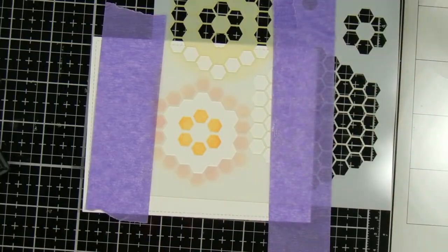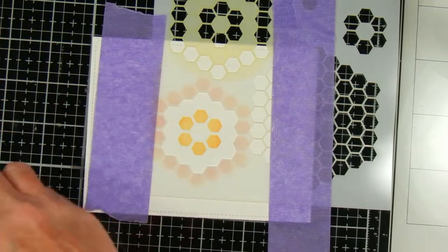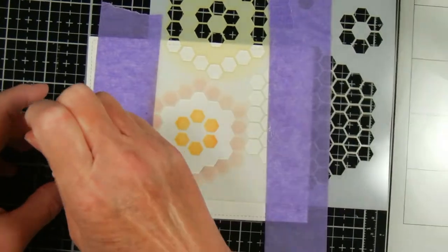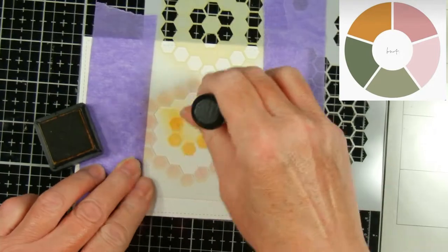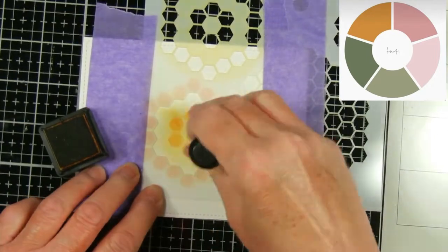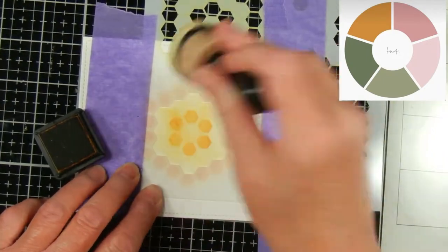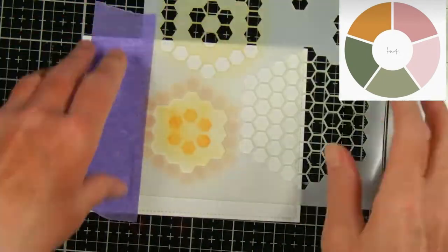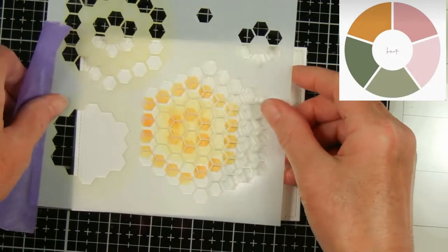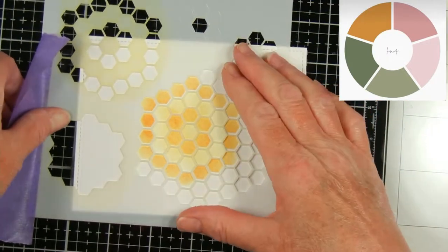This is part of a YouTube hop with Team Tiny and it's a color challenge so I'll put the colors up above that I'm going to use. First of all for the stencil I'm using the orange color of Distress Ink called Spiced Marmalade.